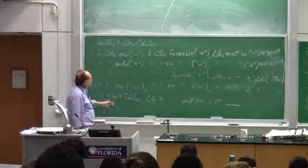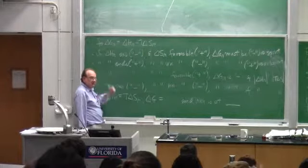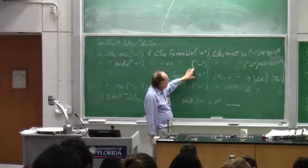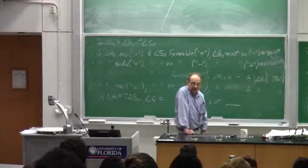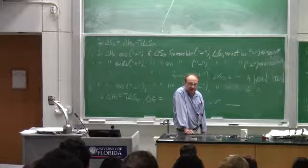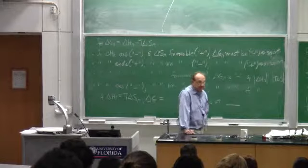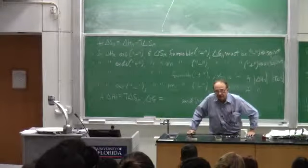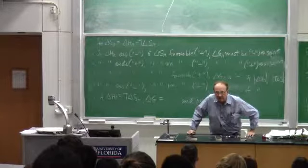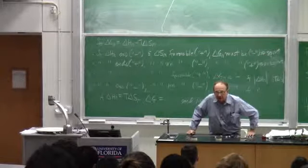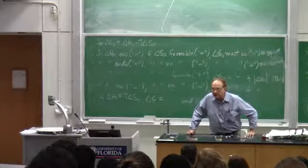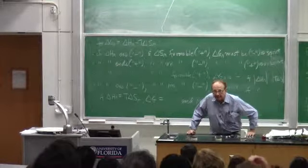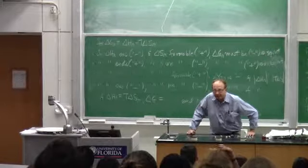If delta H is endothermic—bond disimprovement—the delta H factor works against the reaction being spontaneous. And if delta S is also not favorable, negative, that guarantees that delta G for the reaction is positive. The term I use for that is anti-spontaneous. Because if you have a mixture of reactants and products in this system, the reaction that occurs is from products back to reactants—right to left.